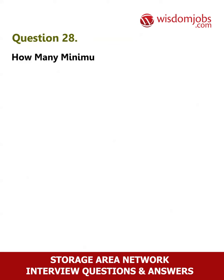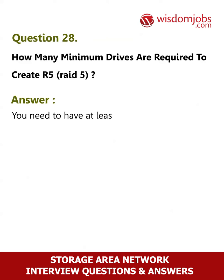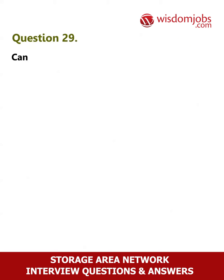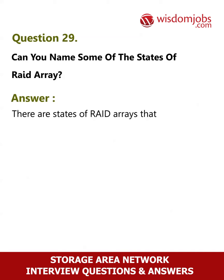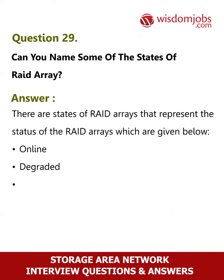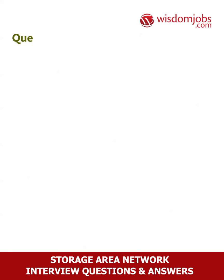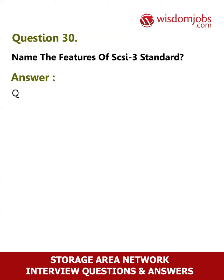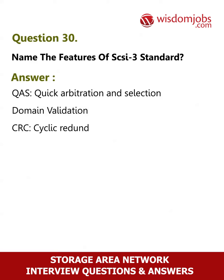Question 28: How many minimum drives are required to create RAID 5? Answer: You need to have at least three disk drives to create RAID 5. Question 29: Can you name some of the states of a RAID array? Answer: The states are Online, Degraded, Rebuilding, and Failed. Question 30: Name the features of the SCSI 3 standard. Answer: QAS (Quick Arbitration and Selection), Domain Validation, and CRC (Cyclic Redundancy Check).